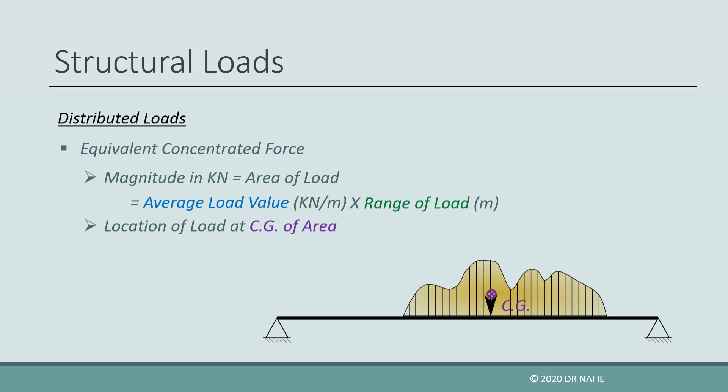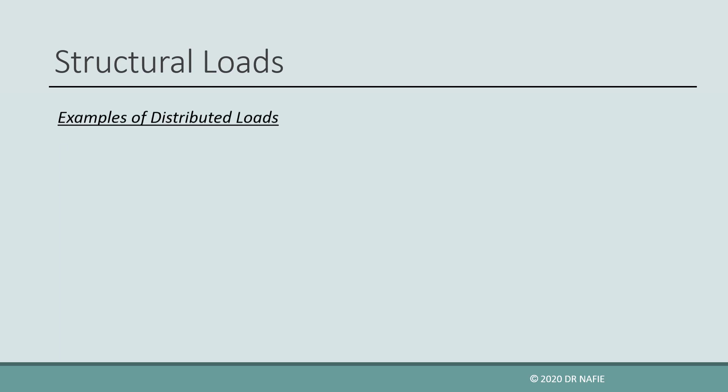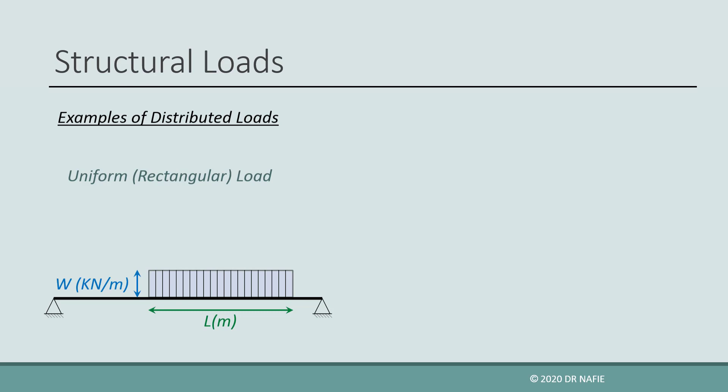Next, we will explore a systematic way for finding the equivalent force for such common loads. Suppose that we arranged the pile of sand such that it will have a constant height along its length. Therefore, the value of the load will be constant, and in that case it will be called a uniform or a rectangular load. For such a rectangular load, the equivalent force will act in the middle, and its magnitude will be equal to W multiplied by L, where W is the value of the load in kilonewton per meter, and L is the length of the load.